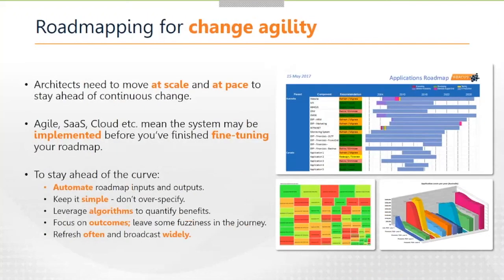The second level of agility is change agility. One of the big challenges for architects in the 21st century is that we need to simultaneously move at scale and at pace to stay ahead of change. As soon as an architect falls behind the people they're trying to lead, they lose their credibility and their ability to influence. There's a risk with agile projects — and with the easy availability of infrastructure and applications via cloud or SaaS — that the road mapping process may take so long that your development team have already implemented or partially implemented before you finish the planning phase.